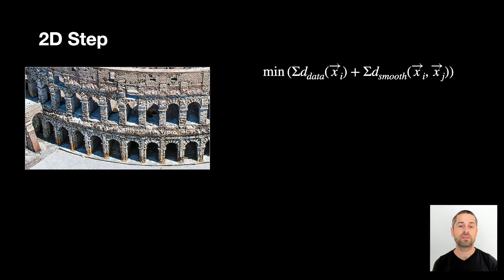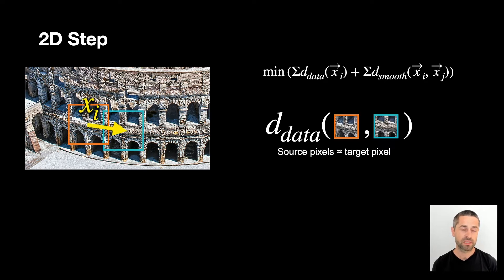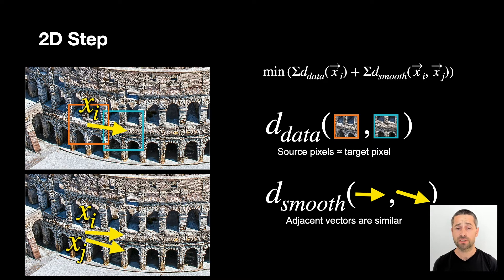In this step, we solve an optimization problem to assign the motion to every pixel. The tool we use is a dense conditional random field, or CRF in short, that assigns labels to pixels. In our case, the labels are motion vectors, and the CRF minimizes an objective consisting of data and smoothness terms. The label of a pixel indicates its target pixel, xi. The data term is the perceptual similarity between the image at a given pixel and its target according to the label xi. We break the smoothness term into angular and magnitude similarity of labels of neighboring pixels, xi and xj.